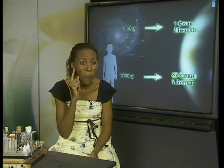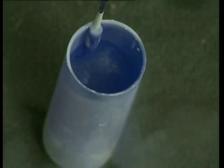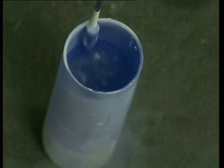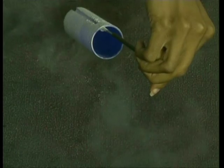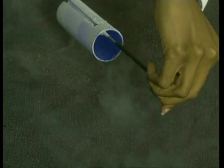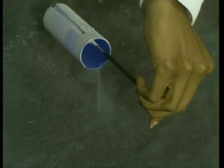For every 1000 grams of a human body, there are 26 grams of nitrogen, whereas for every 1000 grams of universe, there is only one gram of nitrogen. Nitrogen is a gas at room temperature. When the temperature of nitrogen is lowered below its boiling point of -195.8 degrees Celsius, it condenses and forms an odorless, colorless liquid that looks like water.